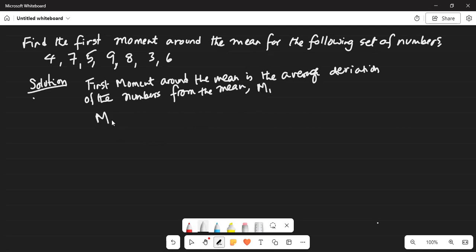And it is written as M1. M1 equals, and average is indicated by this horizontal line, x minus x-bar. This indicates average, the horizontal line.